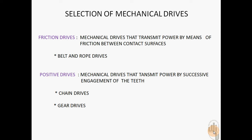In this video, I will be discussing the guidelines for selection of mechanical drives. Mechanical drives are classified based upon the operating principle as friction drives and positive drives. In friction drives, power is transmitted by means of friction between contact surfaces, such as belt and rope drives. In positive drives, power is transmitted by successive engagement of the teeth, as in chain and gear drives.